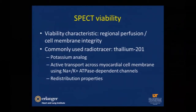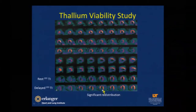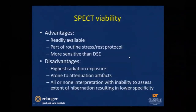The redistribution properties of thallium are very important for assessing myocardial viability. This picture of a thallium viability scan shows the top row as resting imaging and the bottom row as delayed thallium imaging, which can be performed at four or 24 hours. Compared to the resting imaging, there is a clearly significant redistribution of thallium. The advantage of SPECT viability is it's widely available and can be used as part of a routine stress-rest protocol; it's more sensitive than dobutamine stress echo.